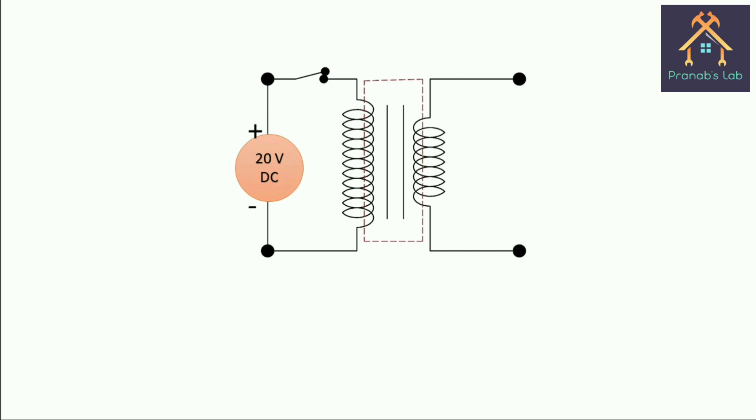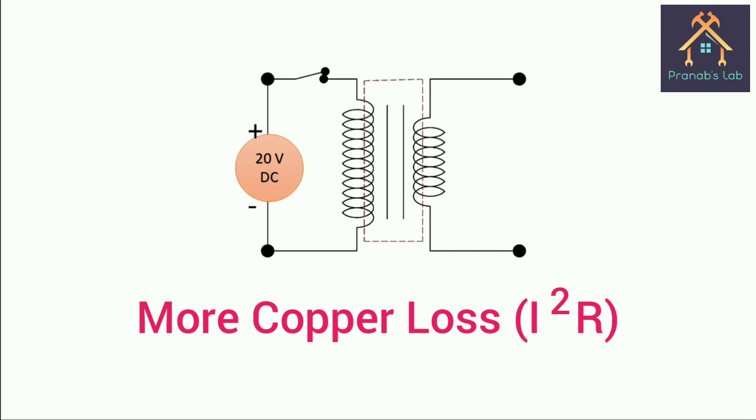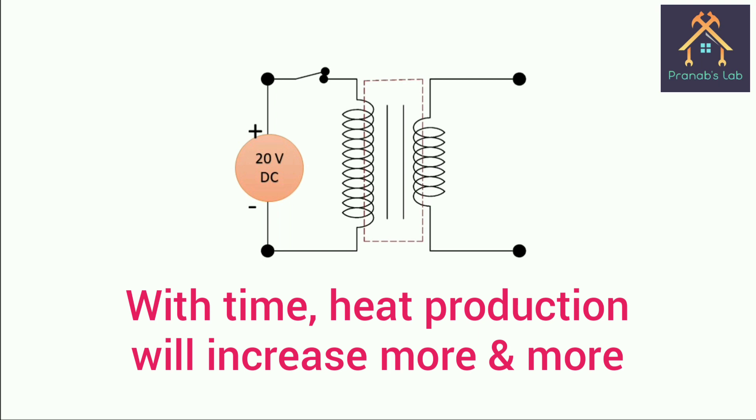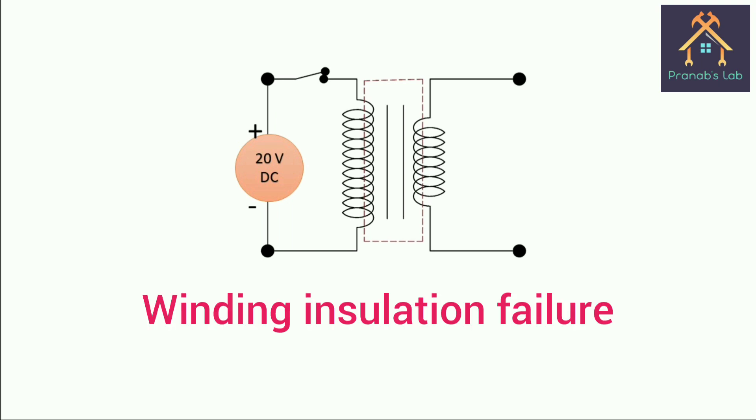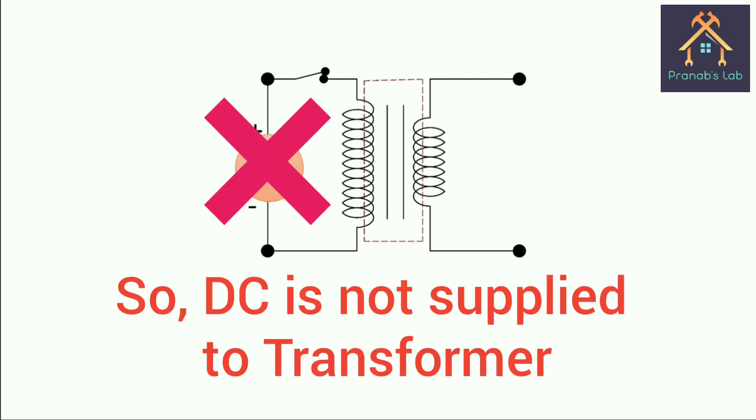In DC supply, the winding behaves like a low resistance, and when we keep the DC supply on for a few minutes, a huge amount of current flows through the winding and more copper loss occurs and the core gets heated. When the DC supply is kept for a long time, the amount of heat produced is more and more, which can be the reason for winding insulation failure and severe short circuit. To avoid this danger, the DC supply is not applied on transformers.